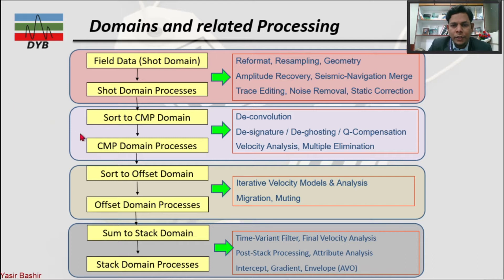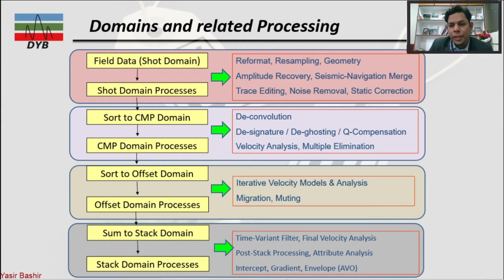The second domain is called the CMP domain — Common Midpoint domain. This is used for deconvolution to improve convolution or recover loss of amplitude. We also use it for denoising, deghosting, compensation, velocity analysis, and multiple attenuation. Velocity analysis is one of the important chapters of seismic data processing and is done in the CMP domain.